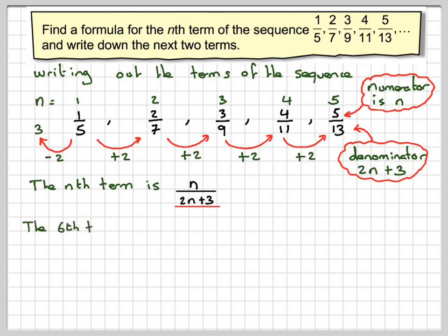To write down the next two terms, either we just use the pattern or we use the nth term. In the first case, n is 6, because we want the 6th term of the sequence, so it's going to be 6. The term will be 6 over 2 times 6 plus 3, which is 6 over 15. Or you can just look at this, make the next one 6 and add 2 to 13.